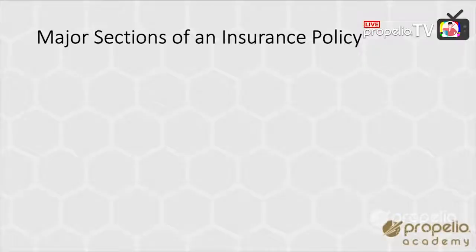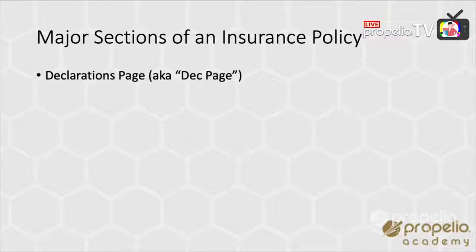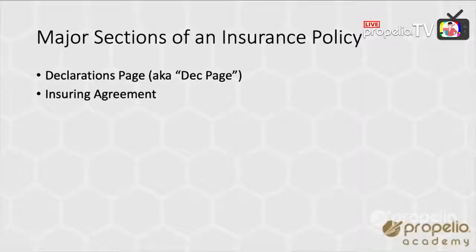Major sections of a standard insurance policy — I'm not going to get in the weeds on liability or property or auto or work comp. This is pretty generic as far as the pieces of a policy. First off, we all know about the deck page, short for declarations page. What it really is is declaring exactly what the coverage is of the policy as succinctly as possible. We also have what's called the insuring agreement. This is the part of the policy where, if you're smart, you'll read every word, because the insuring agreement literally tells you exactly what the insurance company is going to provide coverage-wise. The insuring agreement is the foundation of everything else that comes after it.